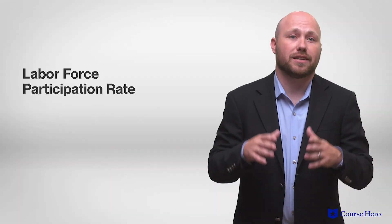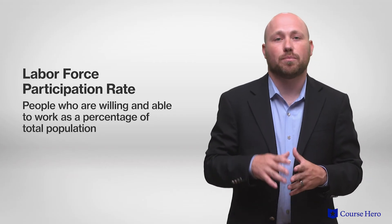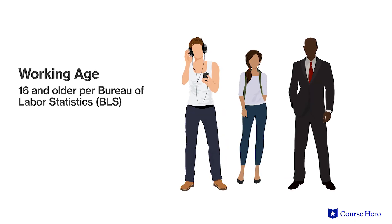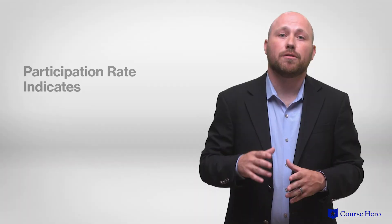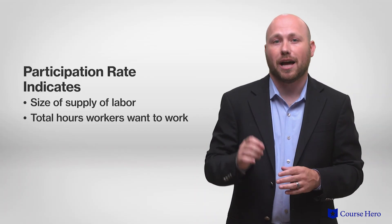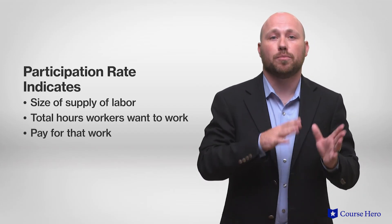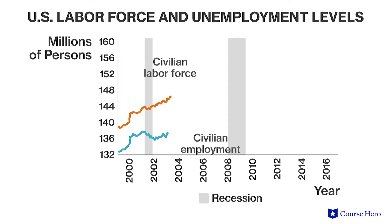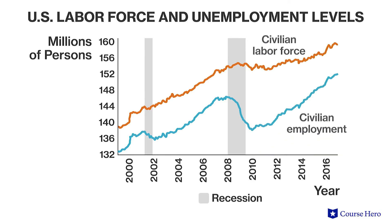The labor force participation rate is calculated as the proportion of people who are willing and able to work, expressed as a percentage of the total population, including those who are unwilling or unable to work. This includes only the non-institutionalized population — those not in an institution such as an inpatient care facility. Working age is defined as 16 or older by the Bureau of Labor Statistics in the United States, though some countries set the limit at 15 and have an upper age limit. The labor force does not include discouraged workers who have been unemployed for a long time and have decided to discontinue their search for work.